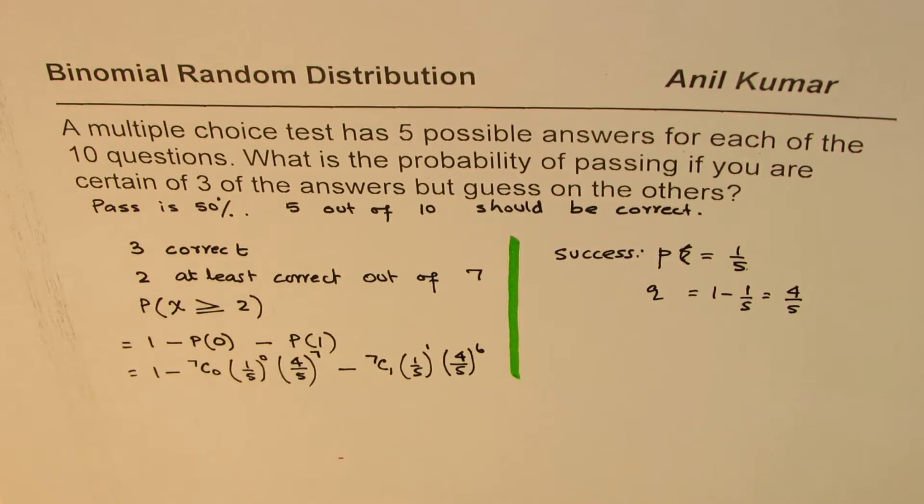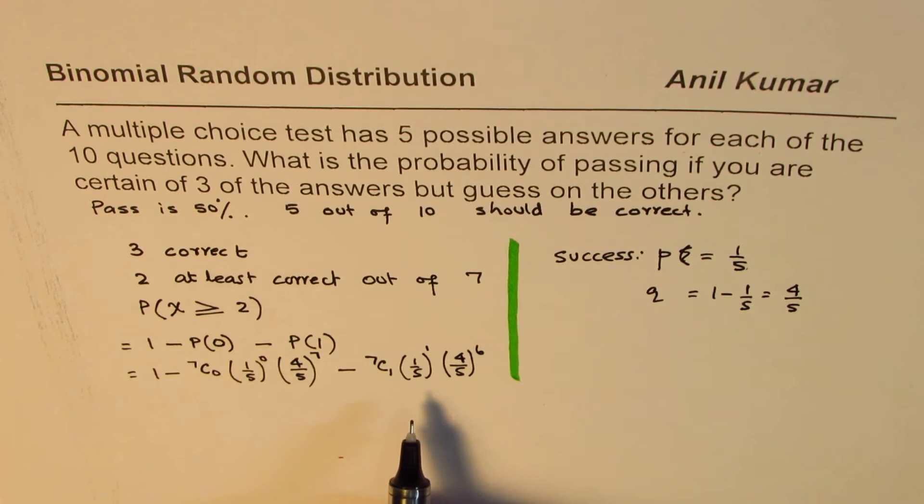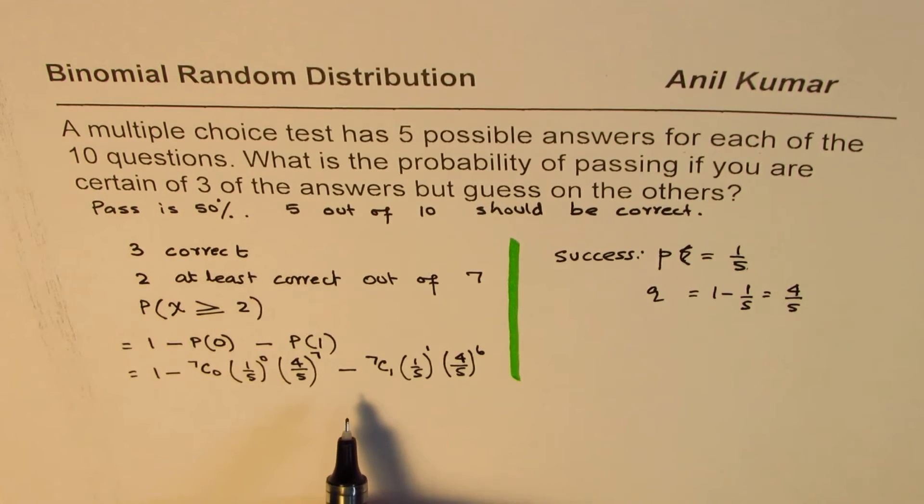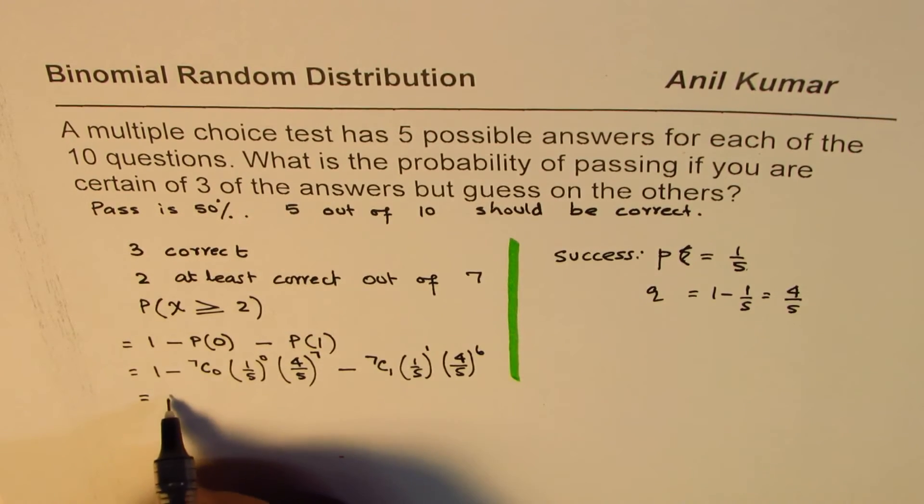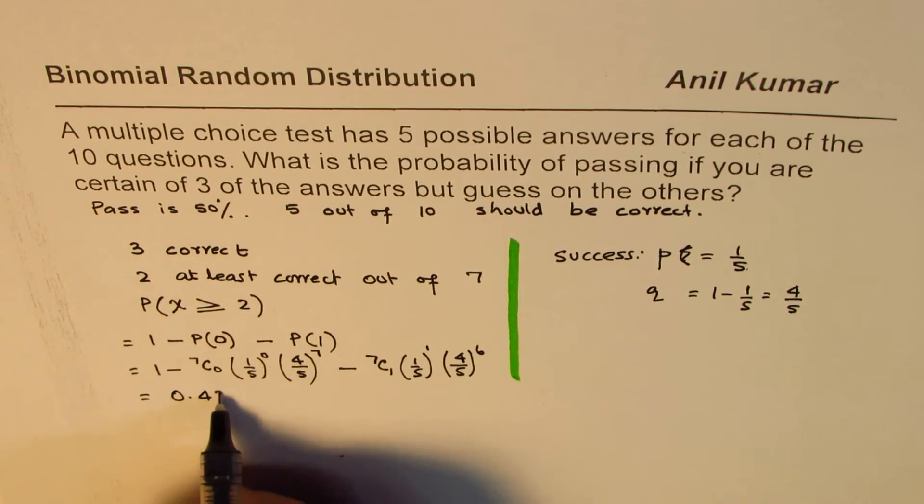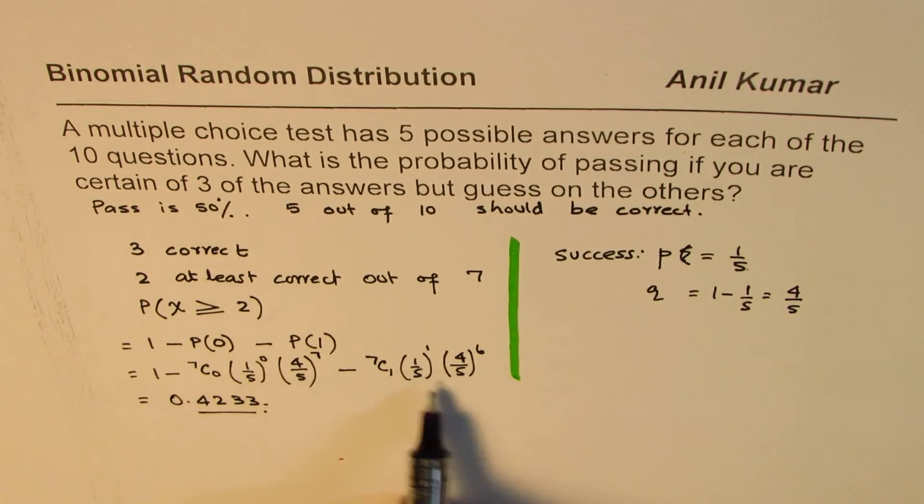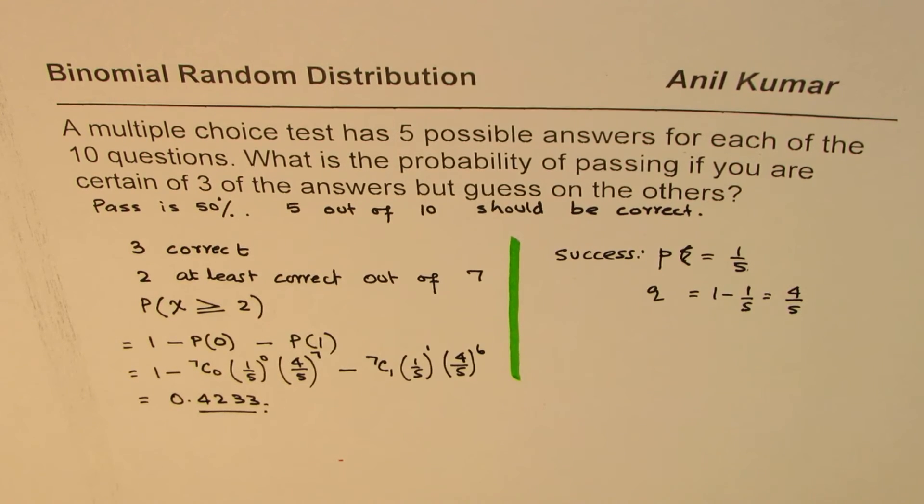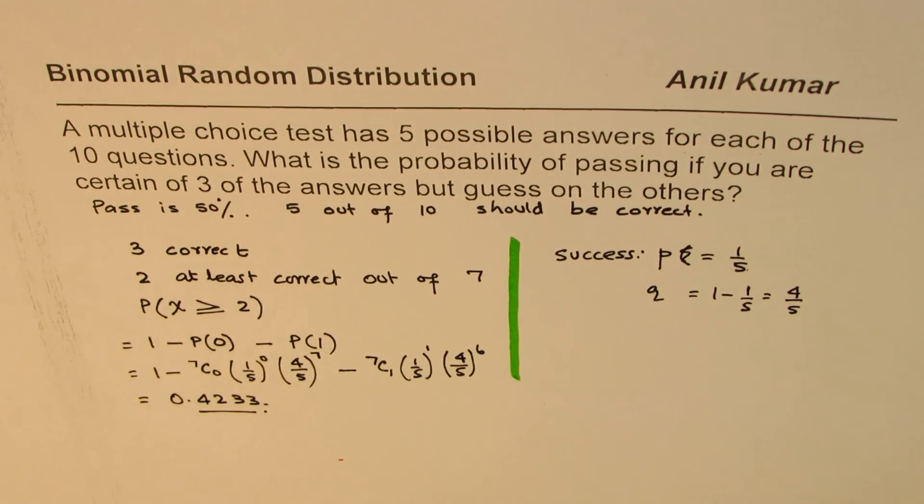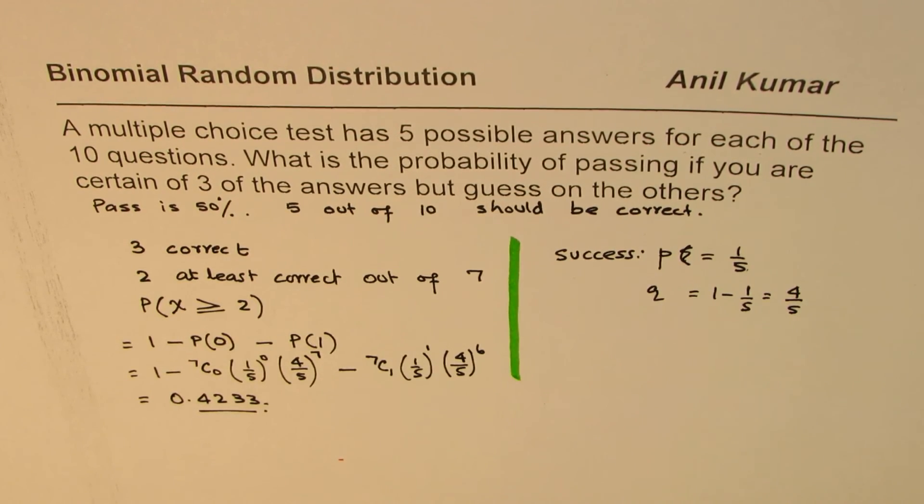So that becomes the probability for getting at least 2 correct out of the remaining 7. So now you can use a calculator and find the answer. If you do that calculation, you will get approximately, this is equals to 0.4233. So that is the answer for the given question. You can use the calculator and calculate it out. But I hope you understand that complement is a better way to go about in such situations. I'm Anil Kumar and I hope that helps. Thank you and all the best.